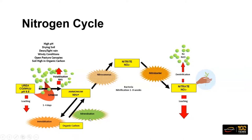Coupled into all this, we've got our organic carbon base — in pasture systems it's quite high — with a lot of mineralisation particularly coming into spring and the warmer months where you've got moisture. You can also have immobilisation, where bacteria needing a feed source use nitrogen to break down carbon, tying it up temporarily until they die and release it back into the system. So that's our nitrogen cycle.